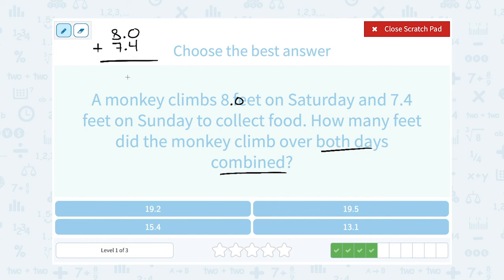I'm lining up all the decimals, and then I'm adding the numbers in each place value. So 0 plus 4 gives me 4, and 8 plus 7 gives me 15.